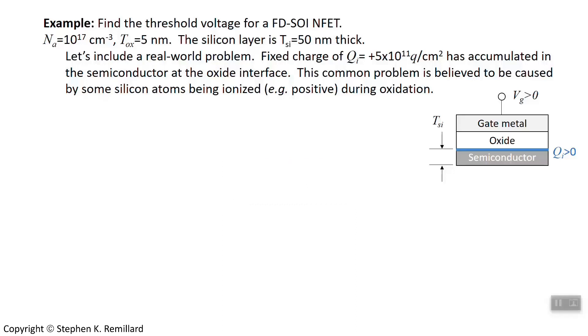We have our standard specifications, the doping density of the semiconductor, the thickness of the oxide, and the thickness of the silicon layer, 50 nanometers. But we are adding in this interfacial charge. It's fixed. It's ions, so they can't move. They're silicon atoms at the interface. The density is given here: Q_i = 5×10^11 times 1.6×10^-19 coulombs per square centimeter. This is believed to occur during fabrication while the semiconductor is being oxidized, while this oxide layer is being grown. It's a positive layer of charge because it's silicon ions.